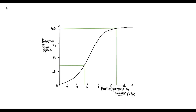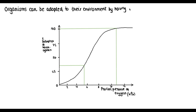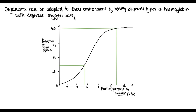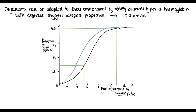Finally, you need to understand that haemoglobin is found in many different organisms. However, its structure may differ slightly between them depending on the environment they're adapted to live in. This is because haemoglobin is a protein made of amino acids, and changing these amino acids gives haemoglobin a different primary structure, causing it to fold in a slightly different way. This can change its shape and its affinity for oxygen, so some organisms' oxyhaemoglobin dissociation curves may be shifted to the left while others may be shifted to the right.